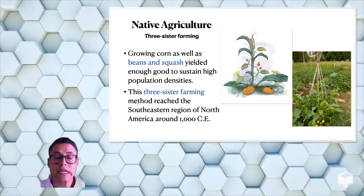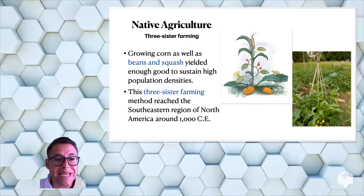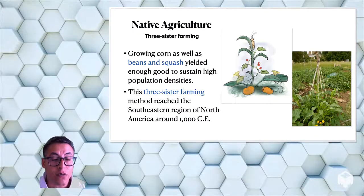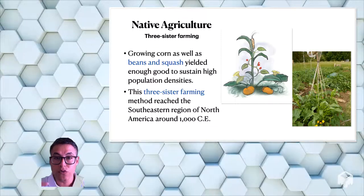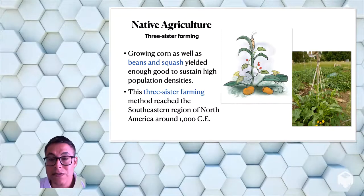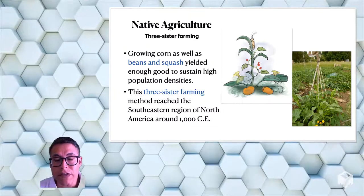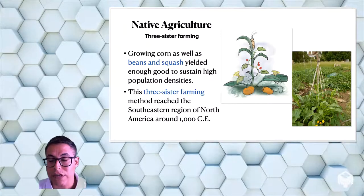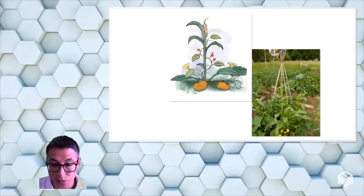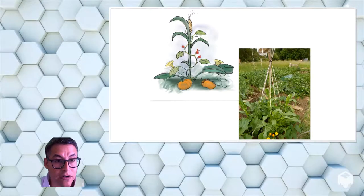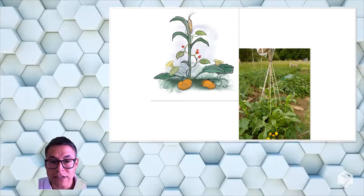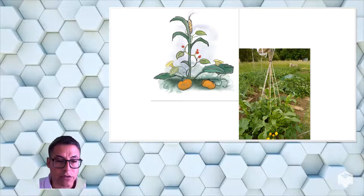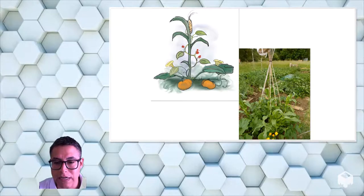And then they grew corn. But aside from growing corn, they were able to grow beans and squash, which grown together yielded a lot more food that would sustain higher population densities. So their cities grew more and more dense. This system is called three-sister farming. And it was a method that reached this southeastern region of North America around a thousand years after the common era. You've got your corn stalk here, and then the beans and squash grow around it. And the nutrients from one plant feed the plant of another category. And this is how it looks in a photograph in real life.